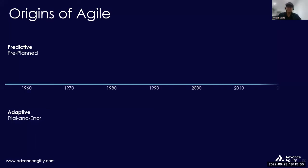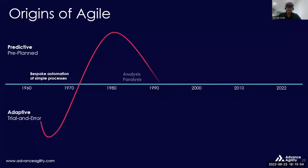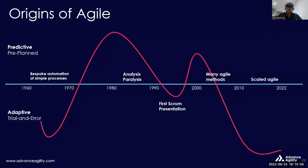We started software development very early, in the 1960s and 1970s, and today we are in 2022 and 2023. There are two patterns: predictive models and adaptive models. When we started, we started with adaptive trial and error, but as C, C++, and Java evolved, there was a lot of analysis paralysis. Around 1996, the first Scrum presentation was made, and in 2001 seventeen people came together and coined the Agile Manifesto values. Scaled Agile started in 2011.